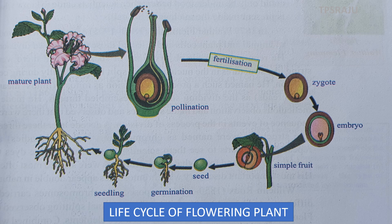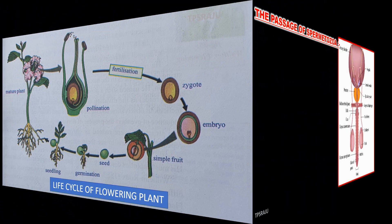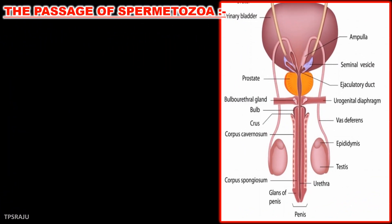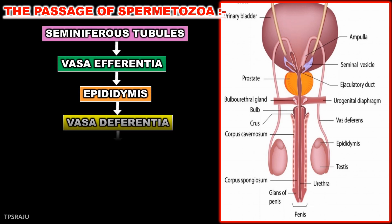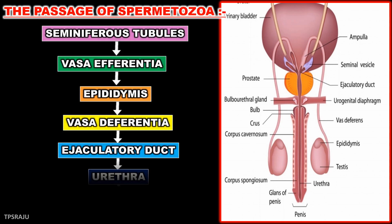This flowchart shows the life cycle of a flowering plant. The pathway in the male reproductive system is: Seminiferous tubules, Vasa efferentia, Epididymis, Vasa deferentia, Ejaculatory duct, Urethra and outside.